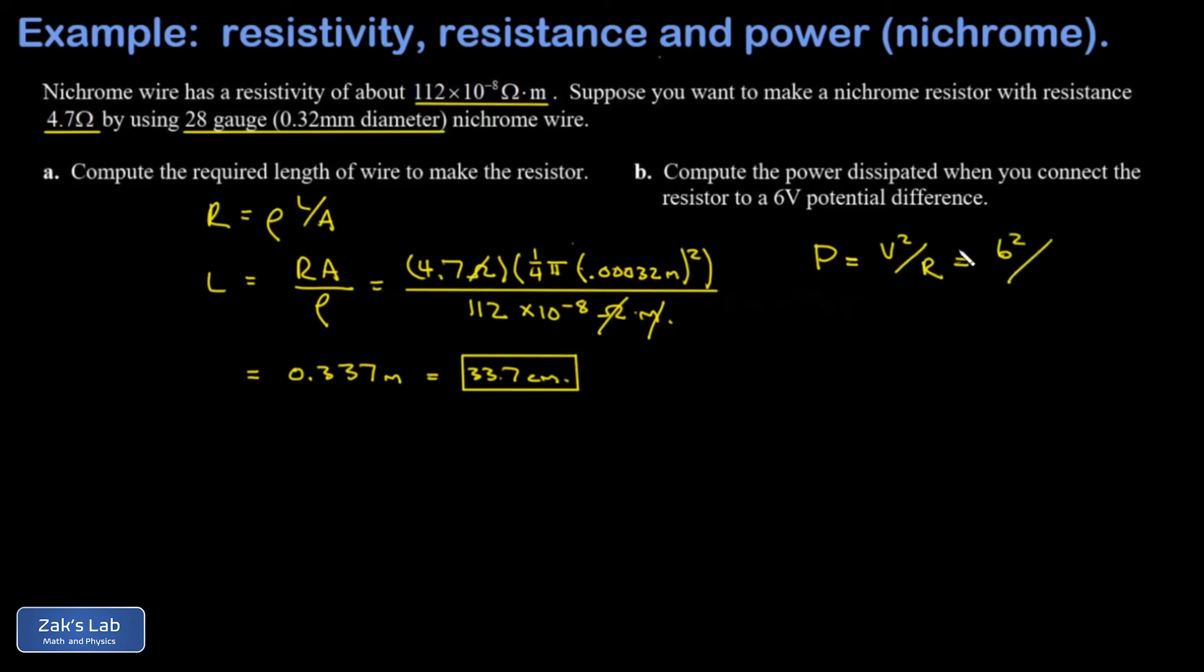And that's 6 volts all squared over R, which is 4.7 ohms. I run the numbers on this and get 7.66 watts for the power dissipated by the resistor, and we're done.